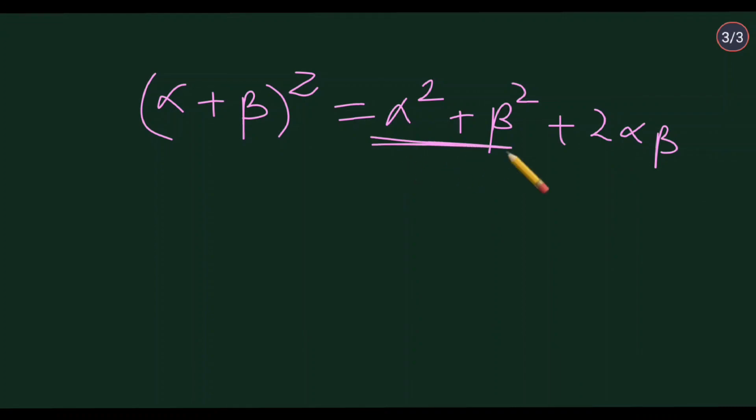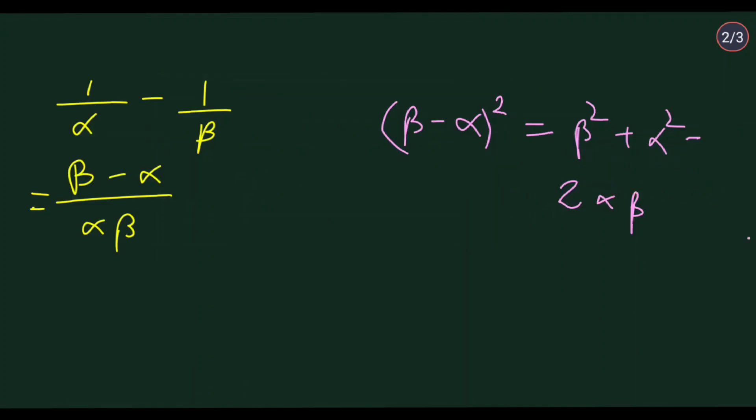You know that when alpha plus beta is squared, you get this expression: alpha square plus beta square plus 2 alpha beta. So you can find the value by sending plus 2 alpha beta to the other side. So you have, in place of this, you can write alpha plus beta whole square minus 2 alpha beta.